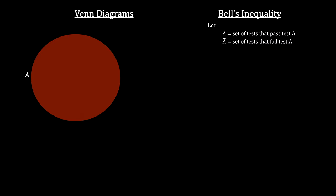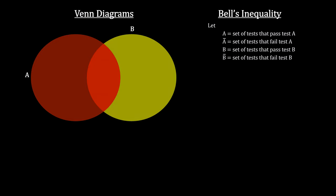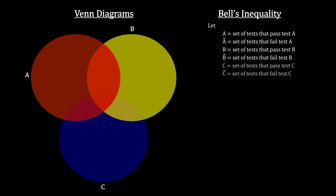Now consider the three sets: Set A of all the tests that passed test A, Set B of all the tests that passed test B, and Set C of all the tests that passed test C. Notice where they overlap and where they don't.